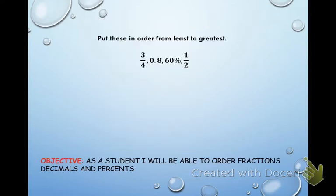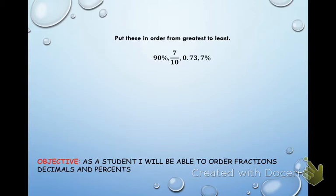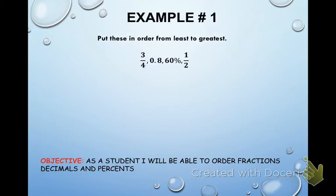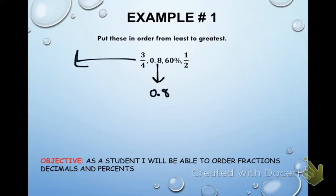Example number one — put them in order from least to greatest. The first thing is to put them all into decimal form. The second number is already 0.8, so we leave that one. For three-fourths, we need to turn that fraction into a decimal.